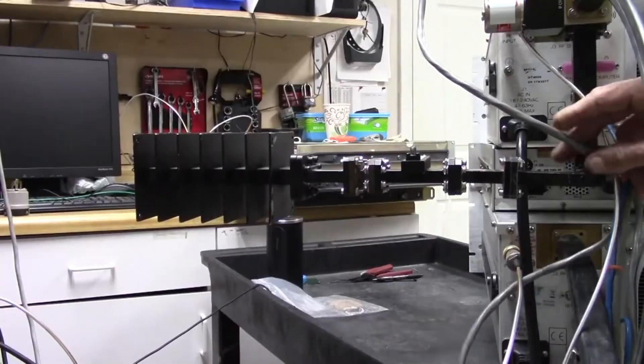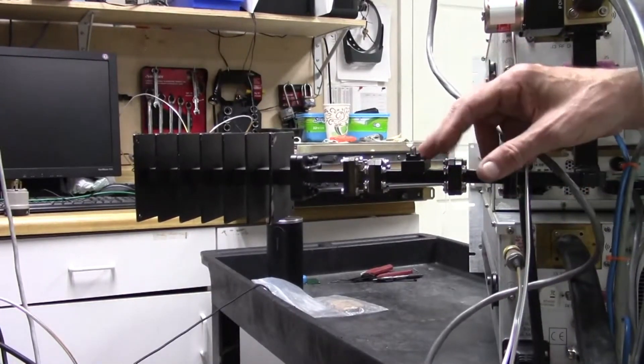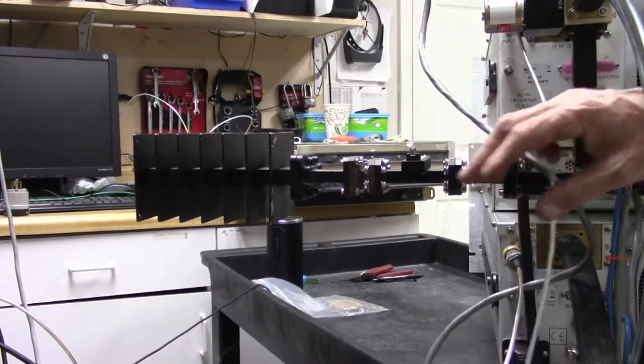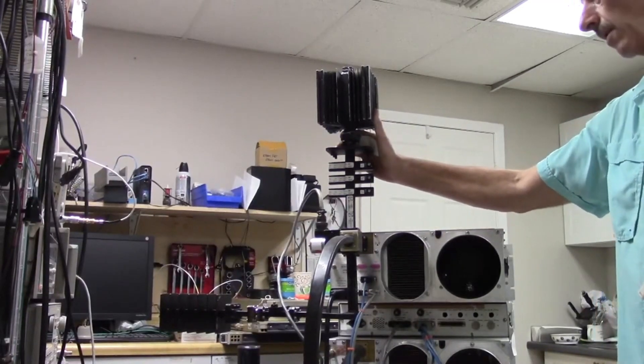Now here's a close-up of the dummy load and cross guide coupler. This is basically a 50 dB down port here. This cross guide coupler and dummy load is only here for testing purposes.